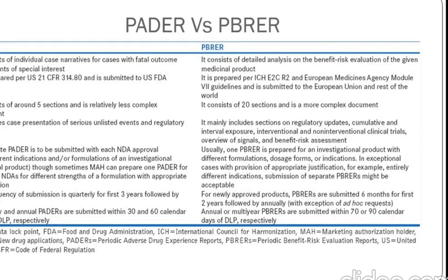Regarding frequency: the PADER is submitted quarterly for the first three years, followed by annually. For newly approved products, it is six months for the first two years, followed by annual. Quarterly and annual PADERs are submitted in 30 and 60 calendar days respectively, whereas for the PBRER it is 70 and 90 days in the case of annual submissions.